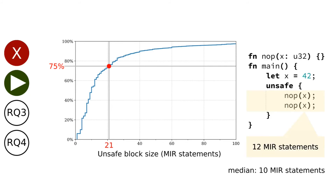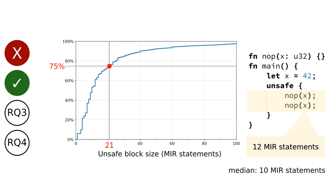When we plot the cumulative distribution of unsafe block sizes, we can see that three quarters of all unsafe blocks have at most 21 statements. For comparison, the shown unsafe block has 12 statements, which is more than the median of 10. So the size of unsafe blocks is typically small. Assuming that size is a good proxy for complexity, we conclude that most developers keep unsafe blocks simple. This supports the second principle of the Rust hypothesis.